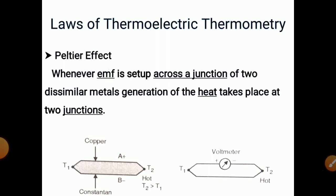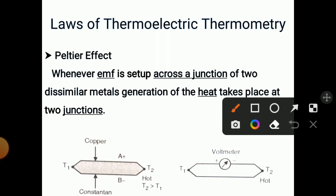Now, what is the Peltier effect? Whenever an EMF is set up across a junction of two dissimilar metals, generation of heat takes place at two junctions. This is the reverse principle — when voltage is applied to two connected dissimilar metals, one junction gets heated and one junction gets cooled. So T2 gets hot and T1 gets cooled. This is the reverse of the Seebeck effect.